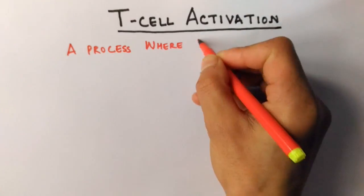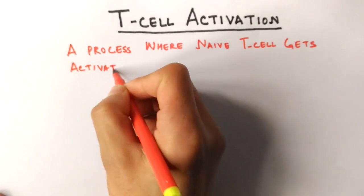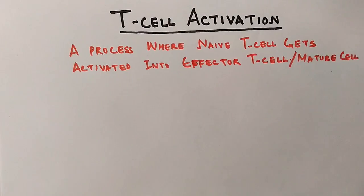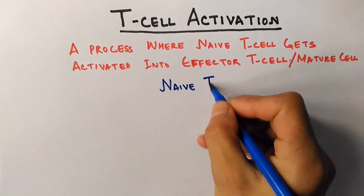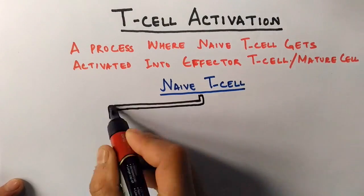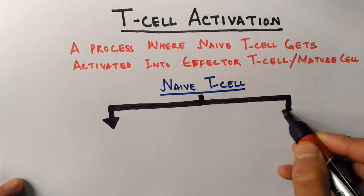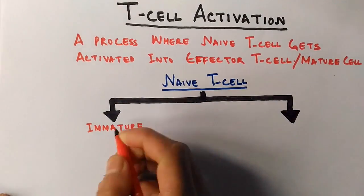It's a process where naive T cell gets activated into effector T cell, or we can say a mature cell. We have a naive T cell which is a form of differentiated T cell from bone marrow that gets differentiated into two different types of cells.